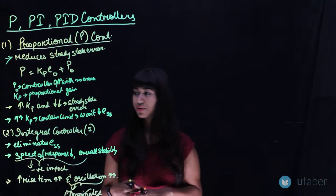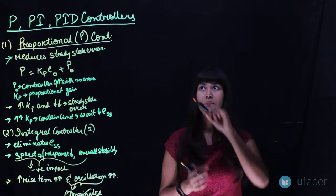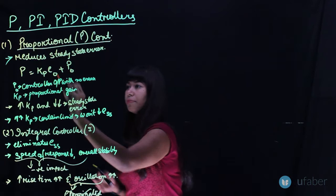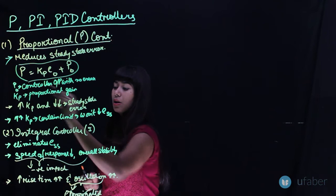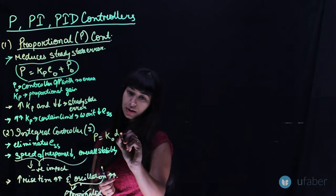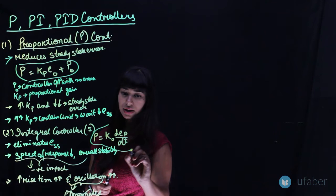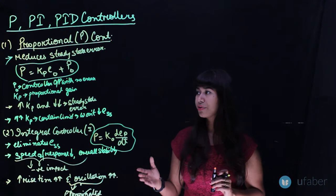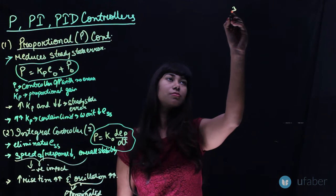The next controller to discuss is the Derivative Controller, or D type controller. But first, let us also write the equation for the integral type controller: P = K₀·(dEP/dt). Now, regarding the integral controller, it is actually used as a combined PI controller — not standalone. Similarly, the derivative controller is combined with the P controller to form a PD controller, which we will discuss next.